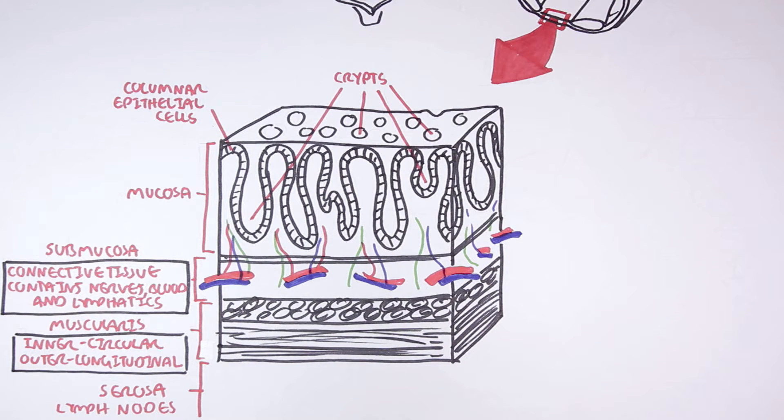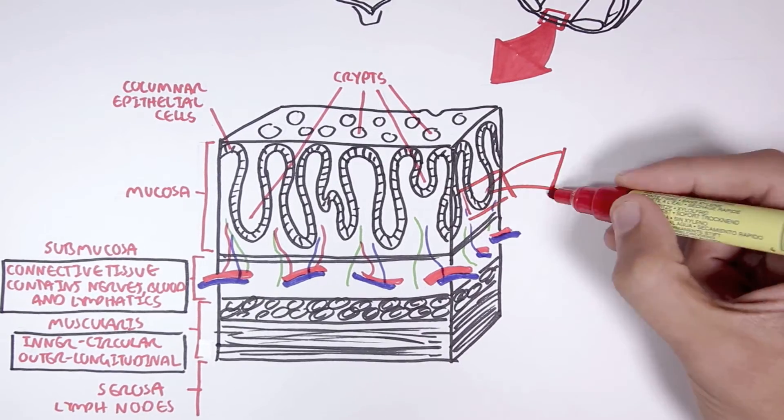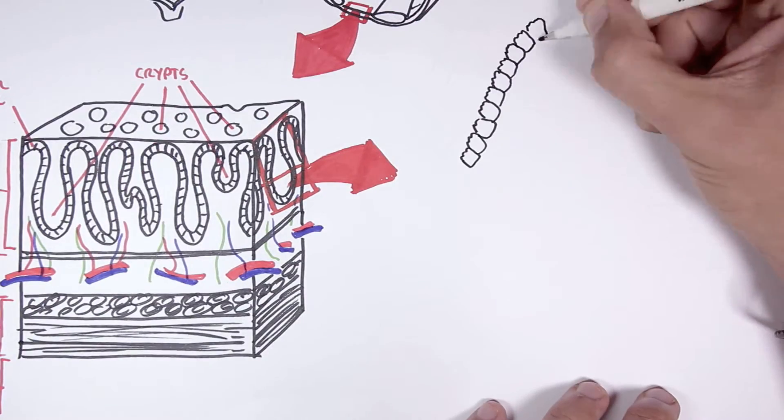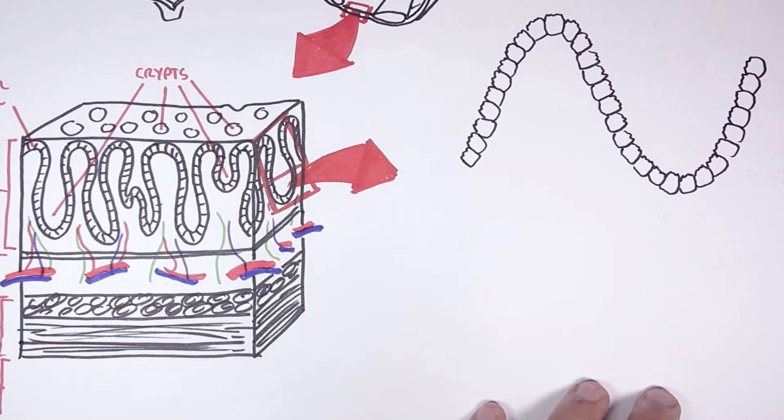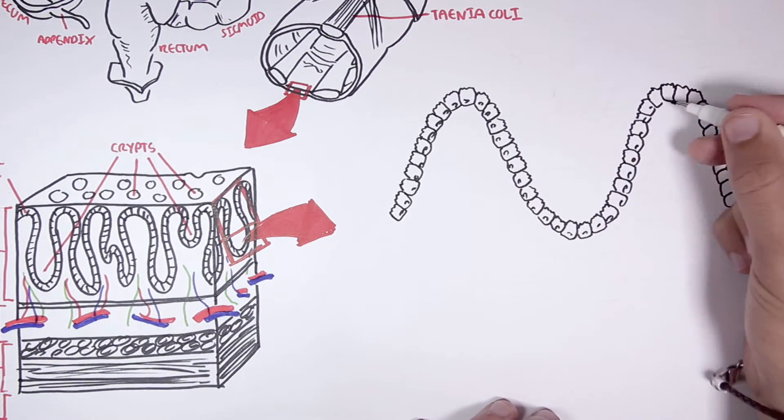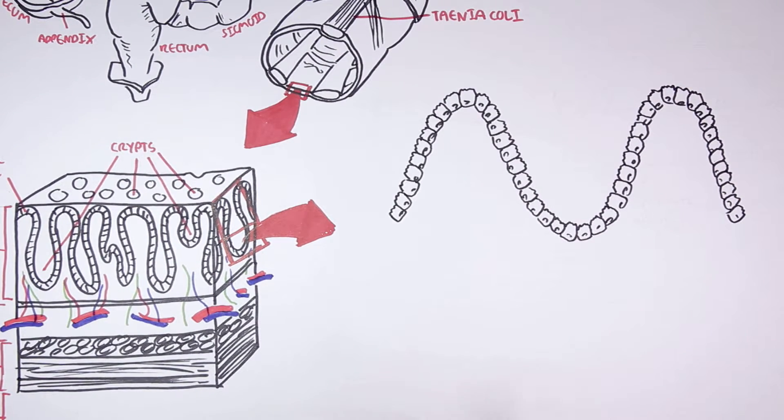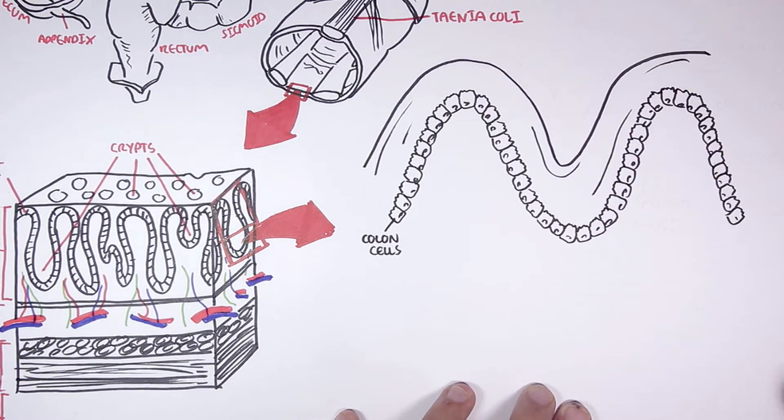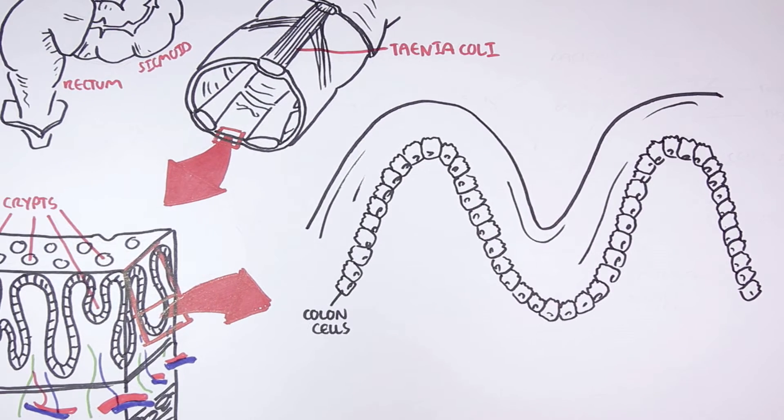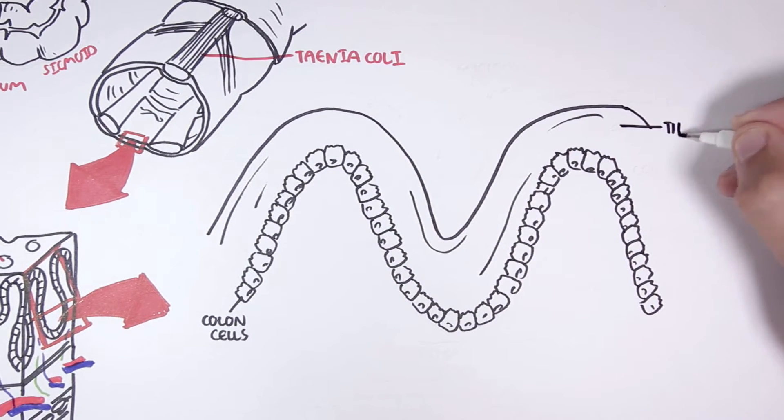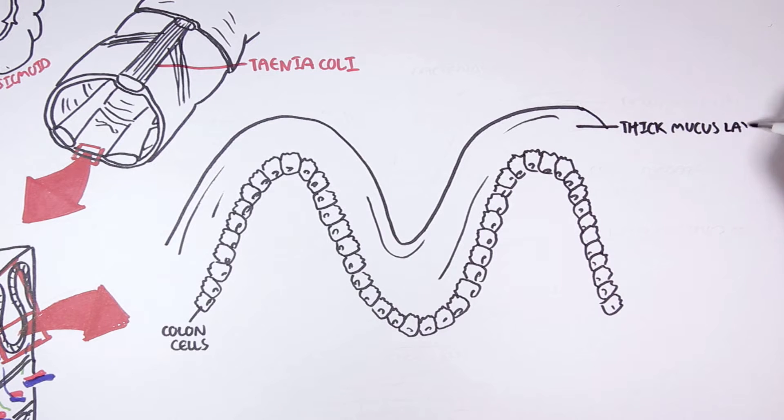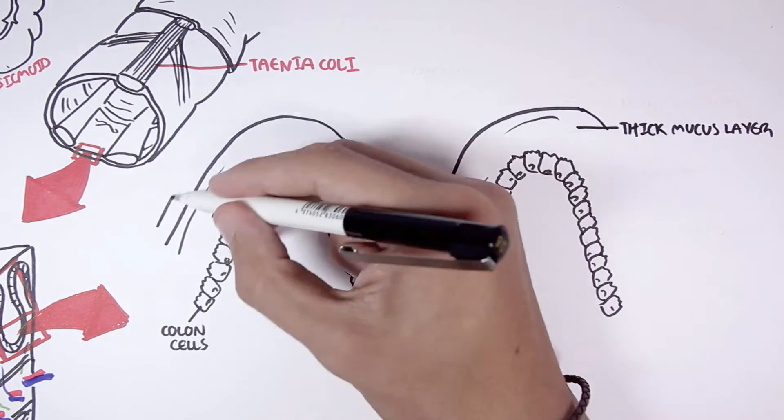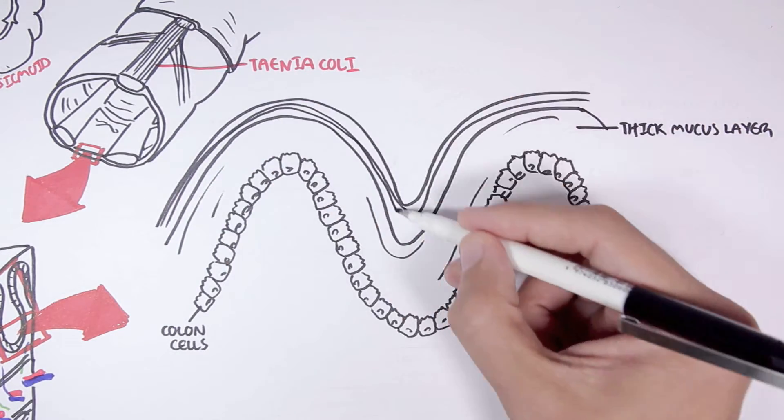Now let's have a closer look at the mucosa layer and at these columnar epithelial cells. Above the colon cells we have mucus, which is a liquid type substance that helps lubricate food as well as protect the lining of the digestive tract from dangerous microbes and toxic substances. In the colon there is a relatively thick mucus layer and then a thin mucus layer on top of that.